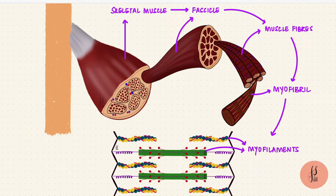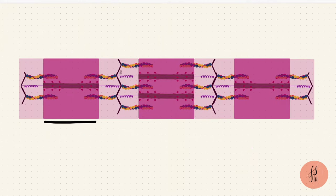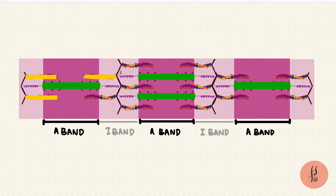The myofilaments are of two kinds, thick and thin filaments which interdigitate. It's the regular arrangement of these filaments in skeletal muscles that creates alternating dark and light bands on the muscle fibers. The dark A bands are formed by the thick filaments and the light I bands have just the thin filaments.